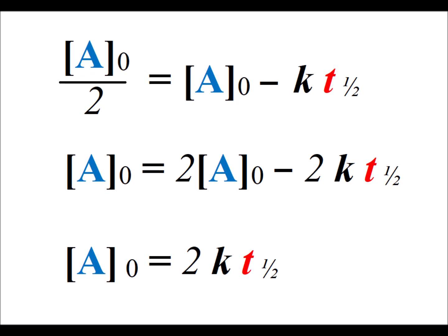Then we multiply through by 2, subtract [A]₀ from each side and add 2k t₁/₂ to each side. And we get that the initial concentration of A is equal to 2 times k times t₁/₂, the half-life time.